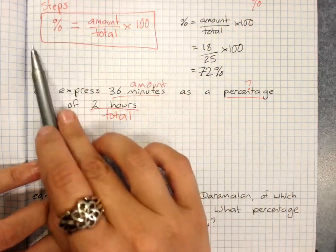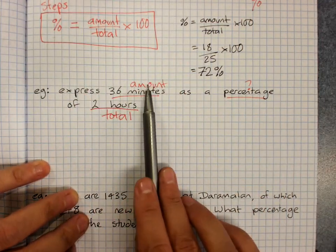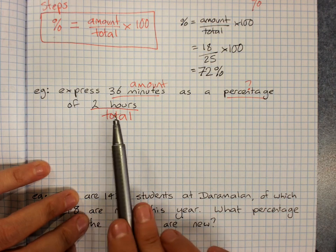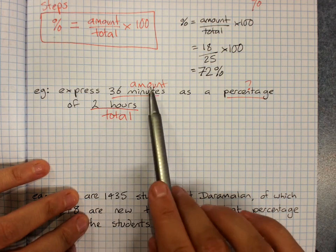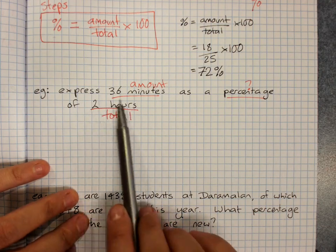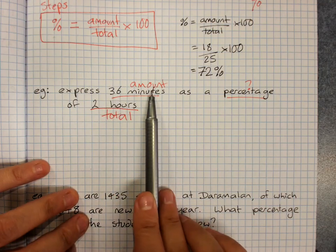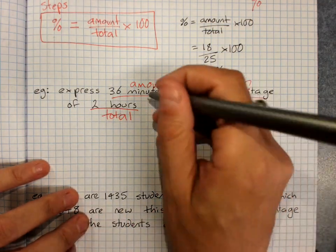But my amount and my total are in different units and that won't work for a percentage. You've got to make sure they're the same units, so you'd change one of them to match the other units. Now 36 minutes to hours is a bit tricky, but 2 hours to minutes is nice and easy.